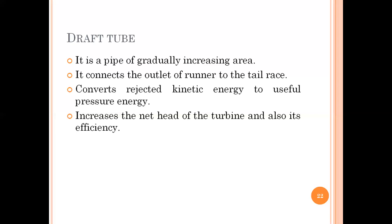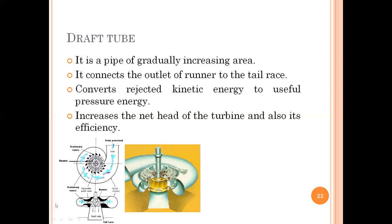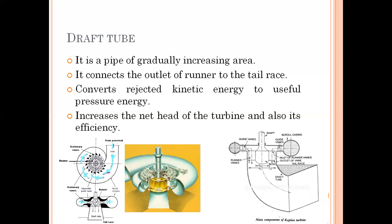One type of draft tube is conical — straight down — used in the Francis turbine where water goes around and then comes down through the turbine. The other example is the Kaplan turbine draft tube, which has a circular section at inlet and rectangular at outlet. In both cases the area is increasing from section one to section two, and both are below the tail race level.